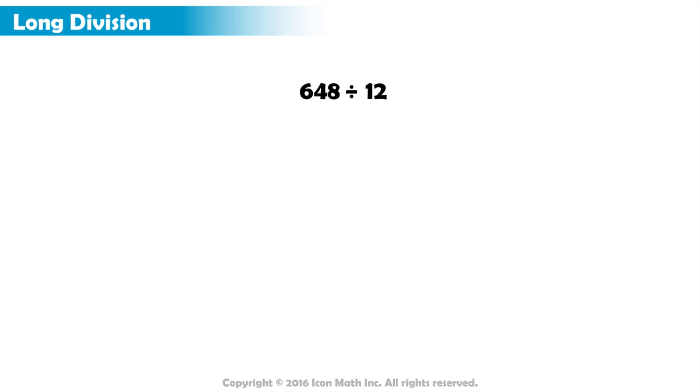We begin by setting up the division problem. The dividend, 648, goes inside the division symbol. The divisor, 12, goes on the left of it.